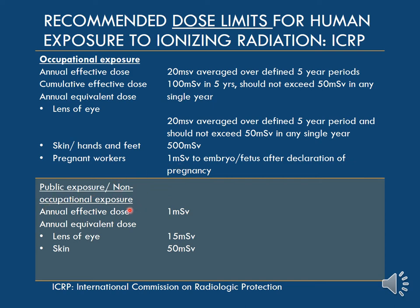For public or non-occupational exposure, the annual effective dose limit is just 1 millisievert, the annual equivalent dose to the lens of the eye is 15 millisieverts, and the skin limit is 50 millisieverts. The public is allowed less radiation because they should not normally be getting exposed to ionizing radiation beyond this. If the public exceeds this limit, it indicates something is wrong — too many radiographic examinations, or a radiation leak or natural disaster.